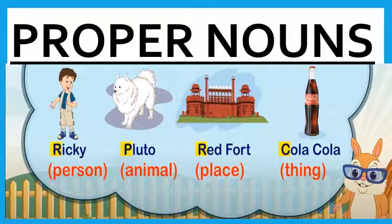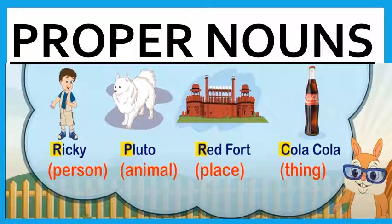Now come to the proper nouns. You can see special names here. Ricky — it's the name of a person. Pluto — it's the name of an animal, so pets' names are also proper nouns. Red Fort — it's a place, so it's special. Cola Cola — it's the name of a thing, it's a company, and its name is Cola Cola. So all these are proper nouns, that's why they are written in capital letters.